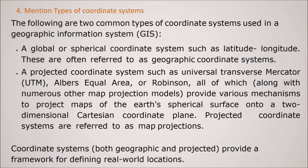Mention types of coordinate systems. What kind of coordinate systems you can have. These are the two common types of coordinate systems used in GIS. First is your global or spherical system such as latitude and longitude. These are often known as GCS coordinate systems - GCS, geographical coordinate system. And then the other is PCS, that is projected coordinate system.